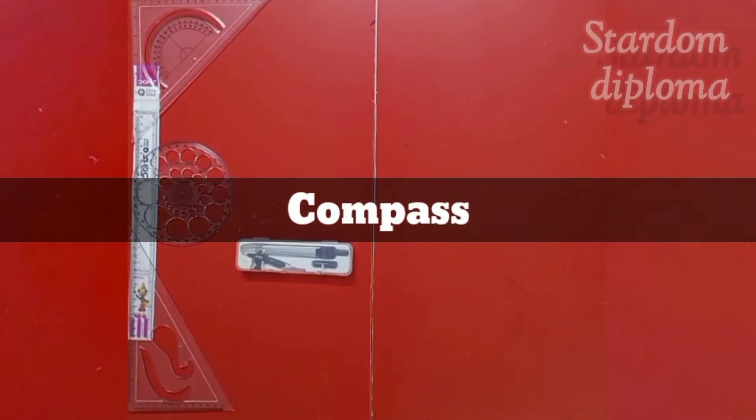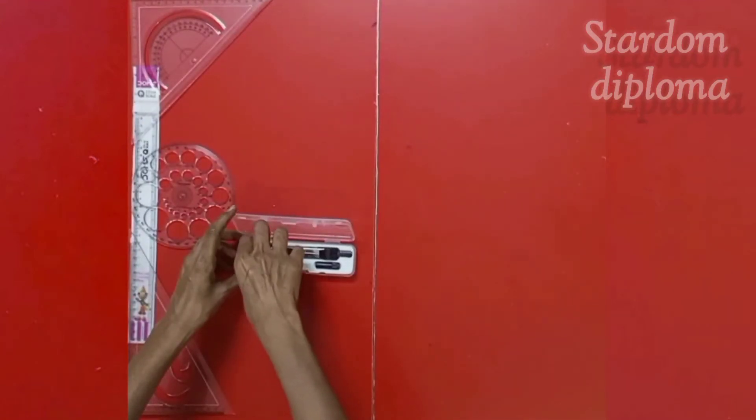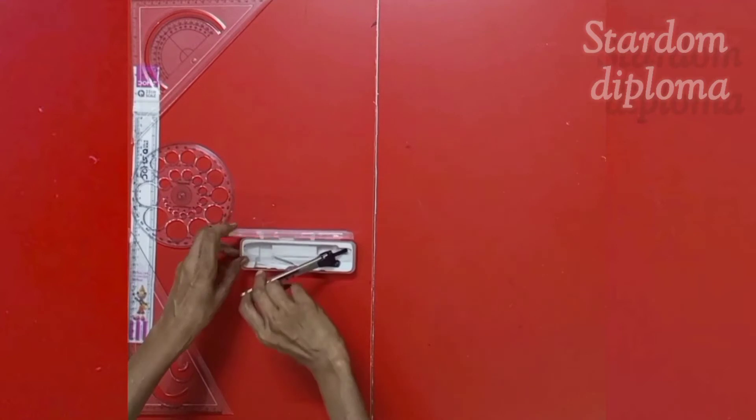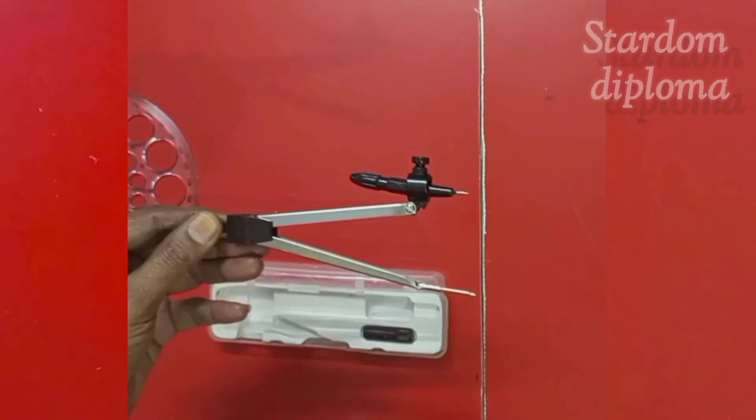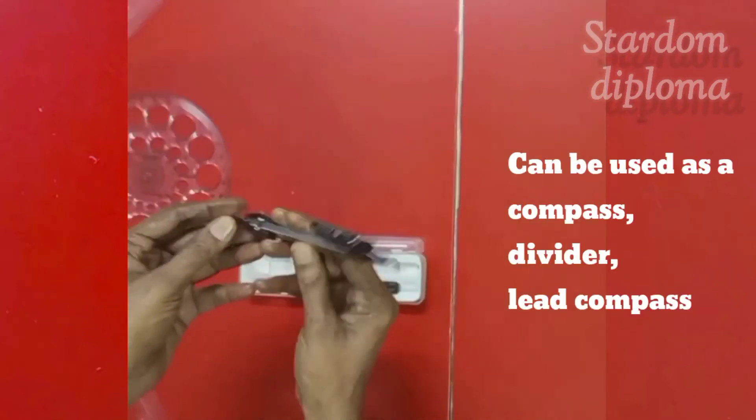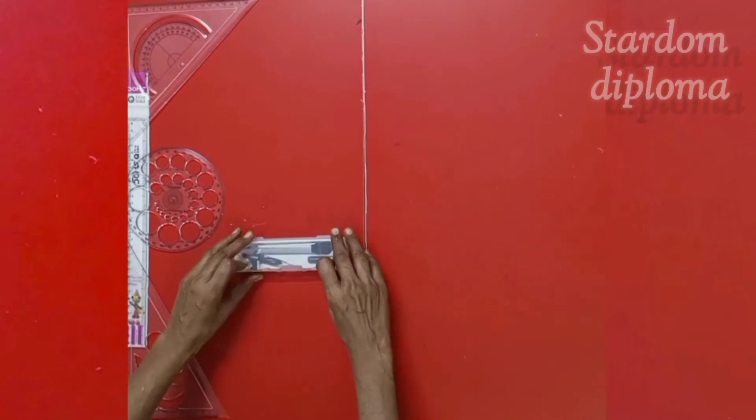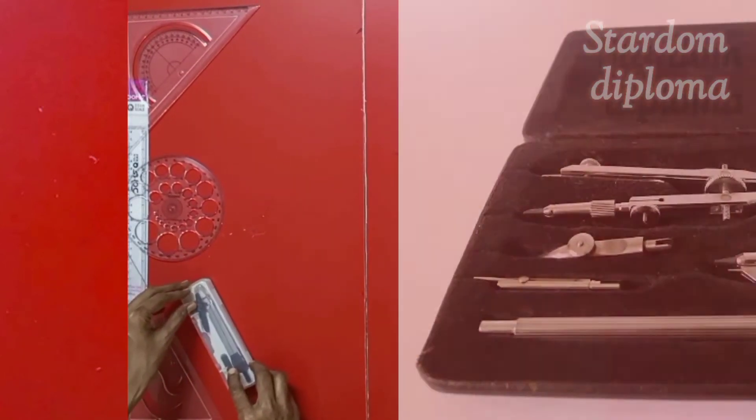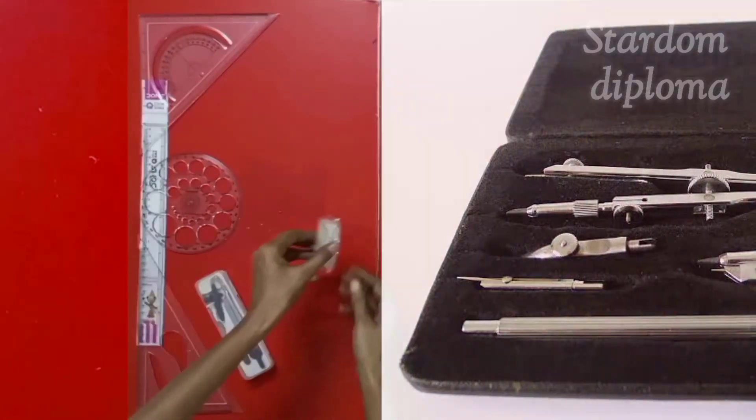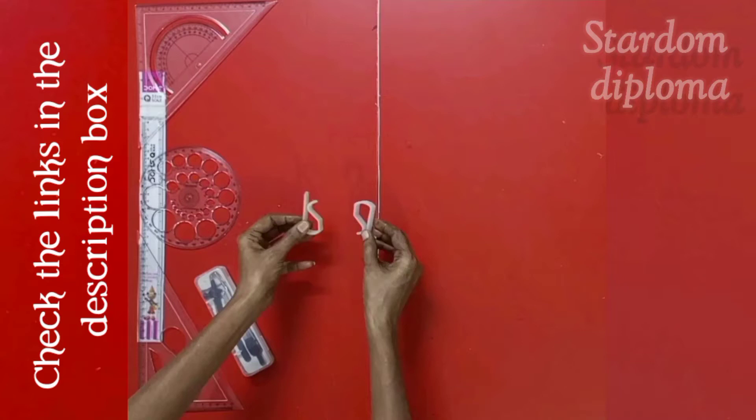Here, we are having the box, three in one compass box, which I have said before. It is a beautiful transparent box. In this, we are having a compass. And this compass, till I have known, using the black color plastic nib, if we fix it, we can use this compass as a divider also. In this kit, I have got this compass box. In some other kits, you can get some other compass box like this. So, check the links in the description box.